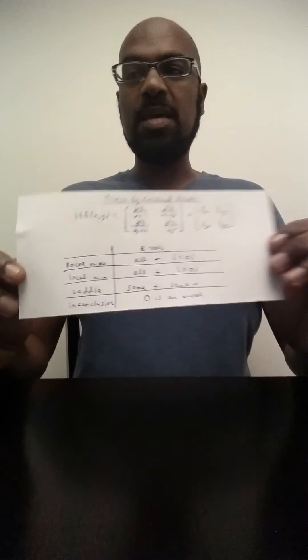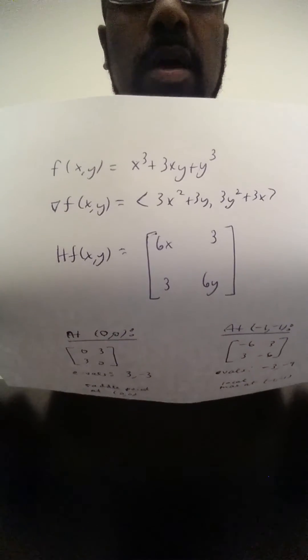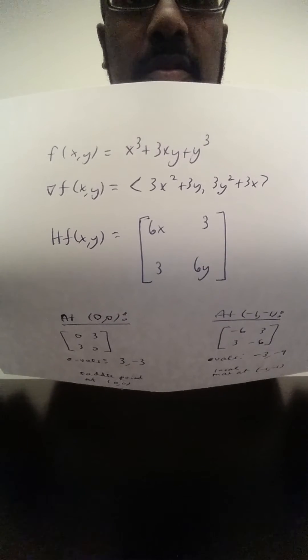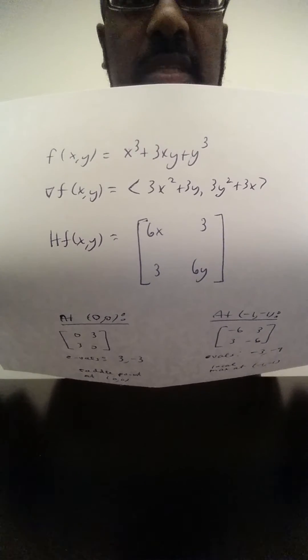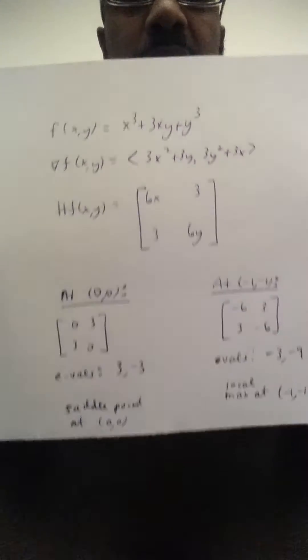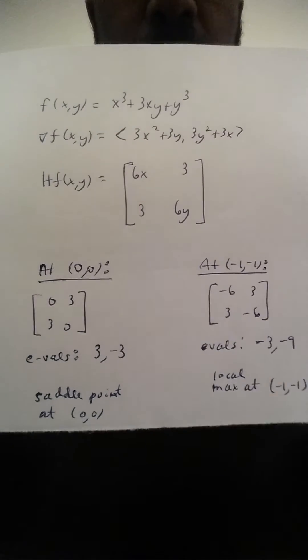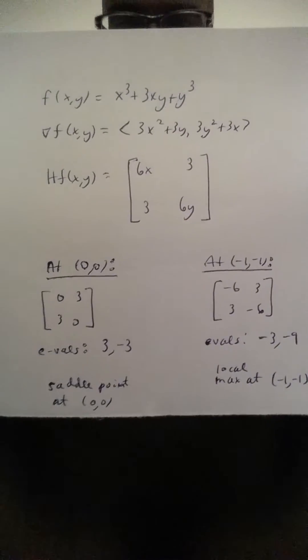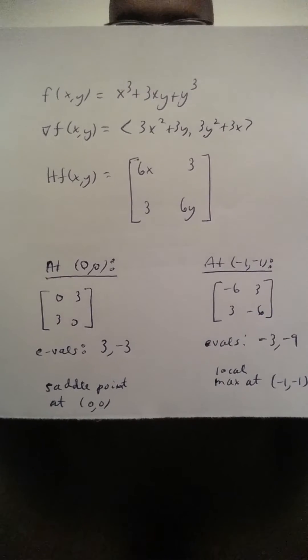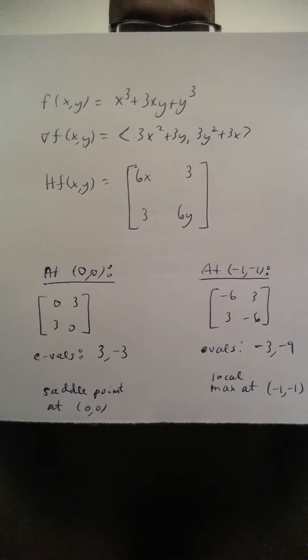So let's use that in the given example that we had. So our function again was the function given here. And so its Hessian is the matrix of second partials which in this case is 6x, 3, 3, and 6y. So at the given points our matrix of partials is at (0, 0), it's 0, 3, 3, 0, and at (-1, -1) it's -6, 3, 3, -6.